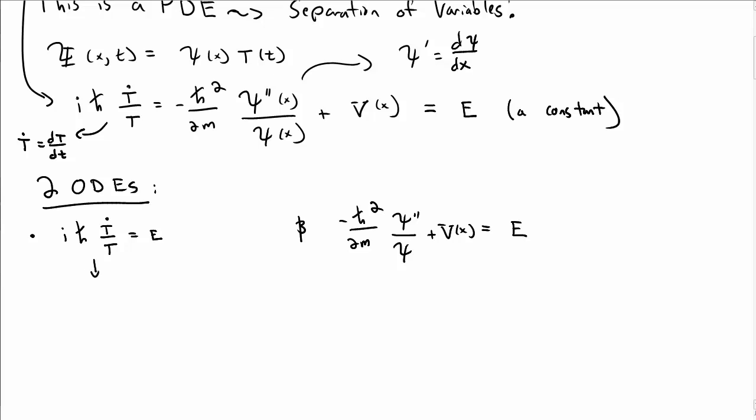Let's move forward in looking at these equations. Multiplying both sides by T, we can write the T equation this way. Multiplying both sides by ψ, we can write this as minus ℏ² over 2m second derivative of ψ plus V ψ equals E ψ.